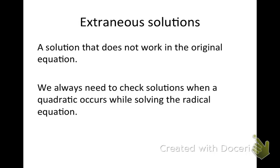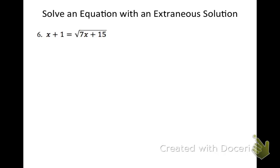Now we need to start looking for extraneous solutions. An extraneous solution is a solution that does not work in the original equation. We always need to check our solutions when quadratics occur while solving the radical equation. So these won't come up whenever we're solving linear equations like we have been doing. But once we get to the point where we have quadratics, then we will need to be sure to check each answer, and sometimes only one answer will work. Sometimes they will both work.